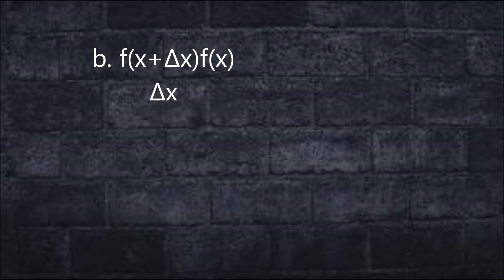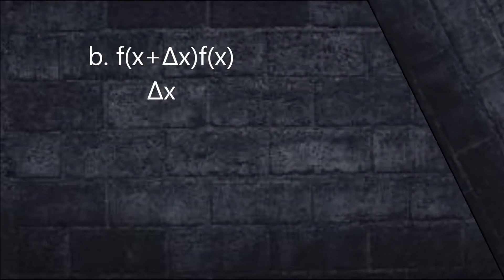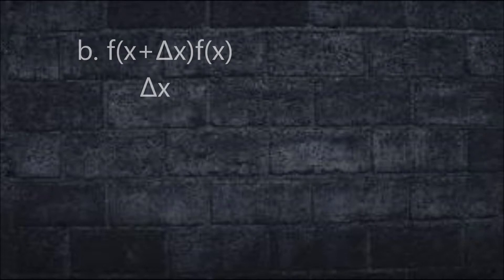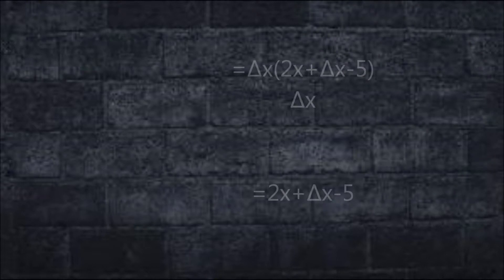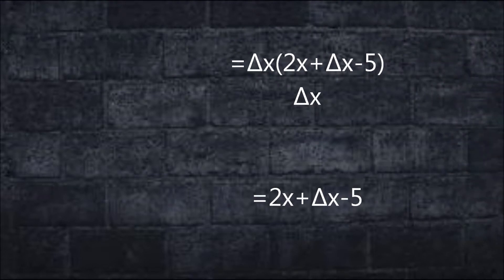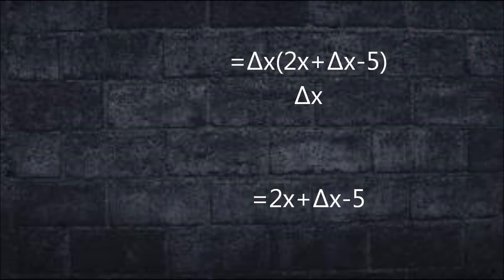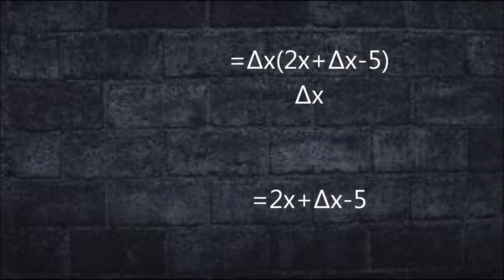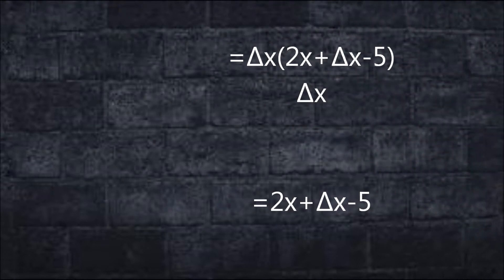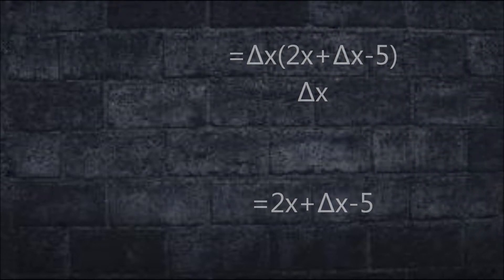Now we're gonna go to letter b. The formula for letter b is f of x plus delta x minus f of x over delta x. Here we only substitute the answer from letter a. So we get delta x in parentheses, 2x plus delta x minus 5, all over delta x. Then cancel the delta x on top and bottom, so the answer is 2x plus delta x minus 5.